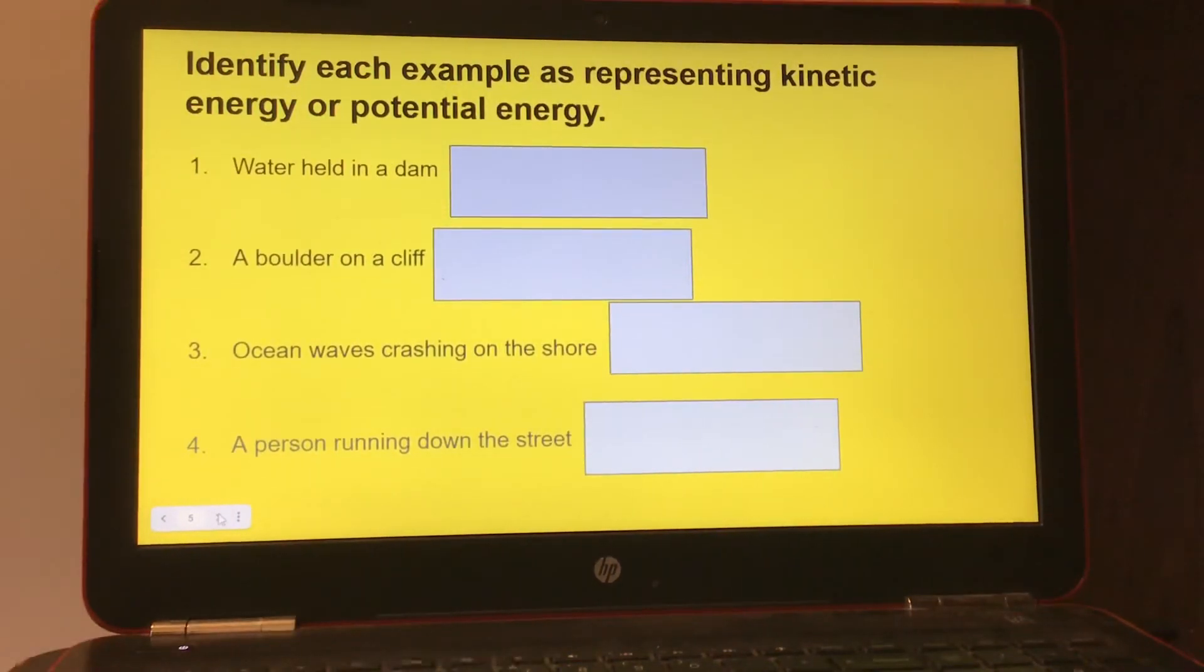Identify each example as representing kinetic energy or potential energy. Water held in a dam. Number two, a boulder on a cliff. Number three, ocean waves crashing on the shore. Number four, a person running down the street.